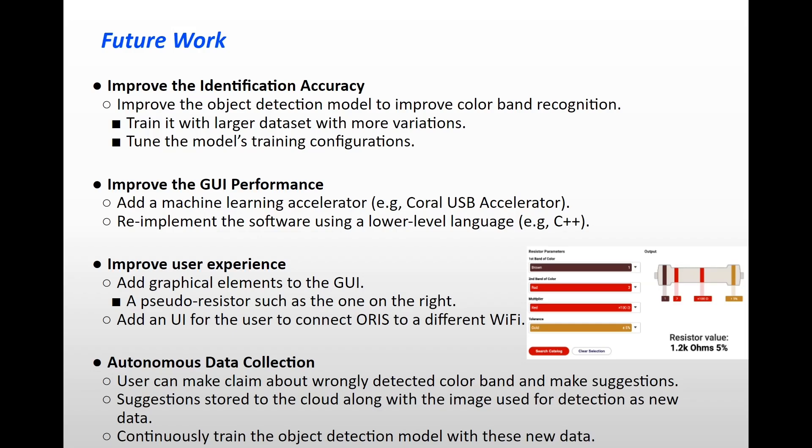Another enhancement to improve the product is based on the first point, which is improved identification accuracy. The identification accuracy of the ORIS prototype depends heavily on generating a well-trained object detection model using a large dataset. Thus, an autonomous data collection scheme can be made to automatically collect and label new dataset, including training the model to continuously improve the ORIS accuracy. We can take the following step to achieve this. First, if the user thinks the resistor identification result displayed by the ORIS is not correct, they will be given an option to claim about wrongly detected color bands. If the users make the claim, they will be given an option to input what they believe are the correct color bands for the resistor, similar to the pseudo-resistor menu shown here on the right.